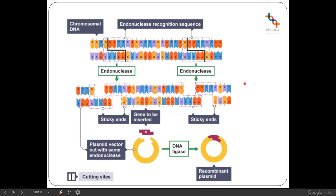When we've cut out our target gene and also cut our plasmid, they are naturally attracted to each other at the right section because we've used the same endonuclease for both. Looking at both our chromosomal DNA and our plasmid, they each have the endonuclease recognition sequence — the restriction site — which is where our restriction endonuclease cuts. Once we've cut out our target gene section and cut the plasmid with the same endonuclease, we transfer the gene into the sticky ends of the plasmid, then use an enzyme called DNA ligase to stick the ends together and form a recombinant plasmid.